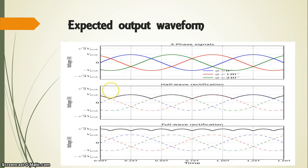Here are the expected waveforms. This is the RYB sequence. The expected output for a half-wave rectification using a three-phase semi-converter is shown here.